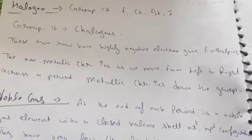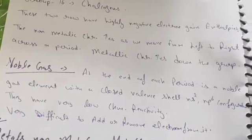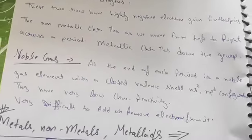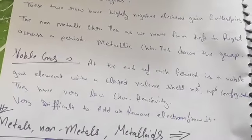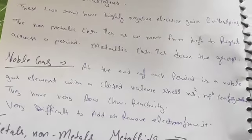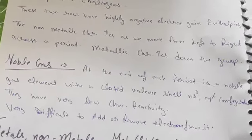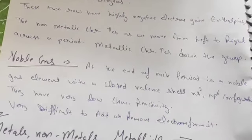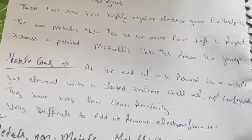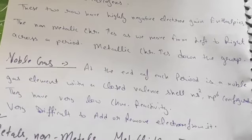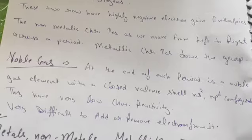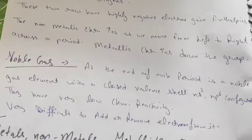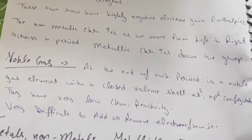After that we have noble gas, which means inert gas. Which are noble gases and where are they? Noble gases are in Group number 18: helium, neon, argon, krypton, xenon, and radon. Their atomic numbers are: helium 2, neon 10, argon 18, krypton 36, xenon 54, and radon 86.